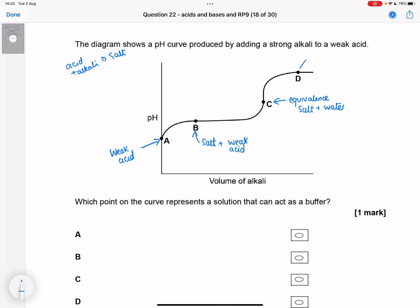And when we're at D, we've added more alkali than we needed. So now we've got salt and water and excess alkali. The pH is remaining pretty constant at D because it's just the pH of the alkali.